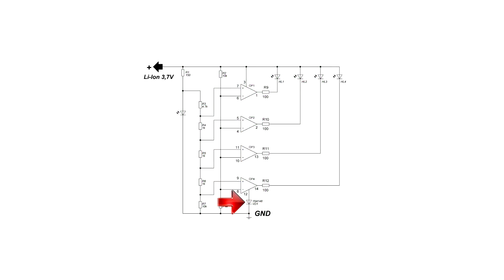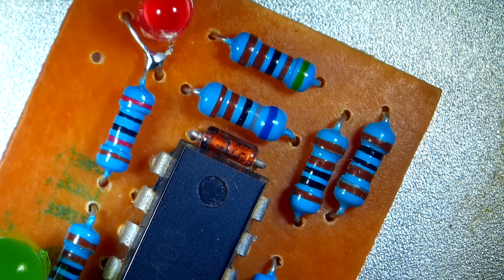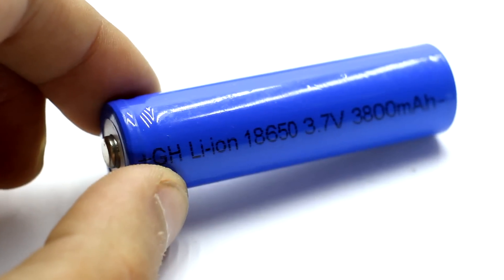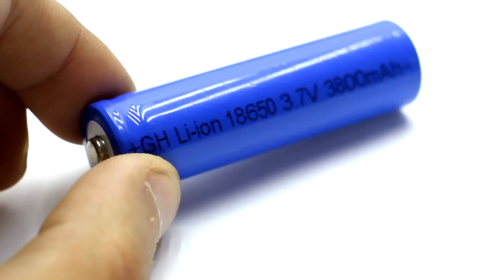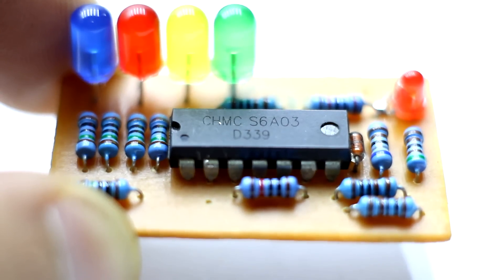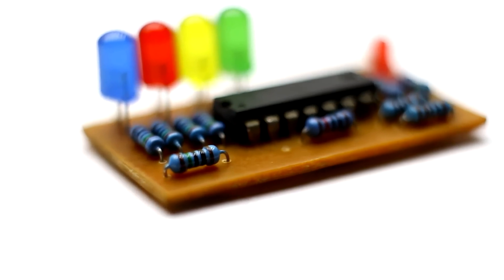The diode VD1 protects the chip in case the polarity of the connection to the battery is mixed up. As you know, the voltage of a fully charged lithium ion battery should be around 4.1 to 4.2 volts, so the dividers are selected in a very narrow range using resistors with a tolerance of only 1%, which guarantees high precision operation of the indicator.